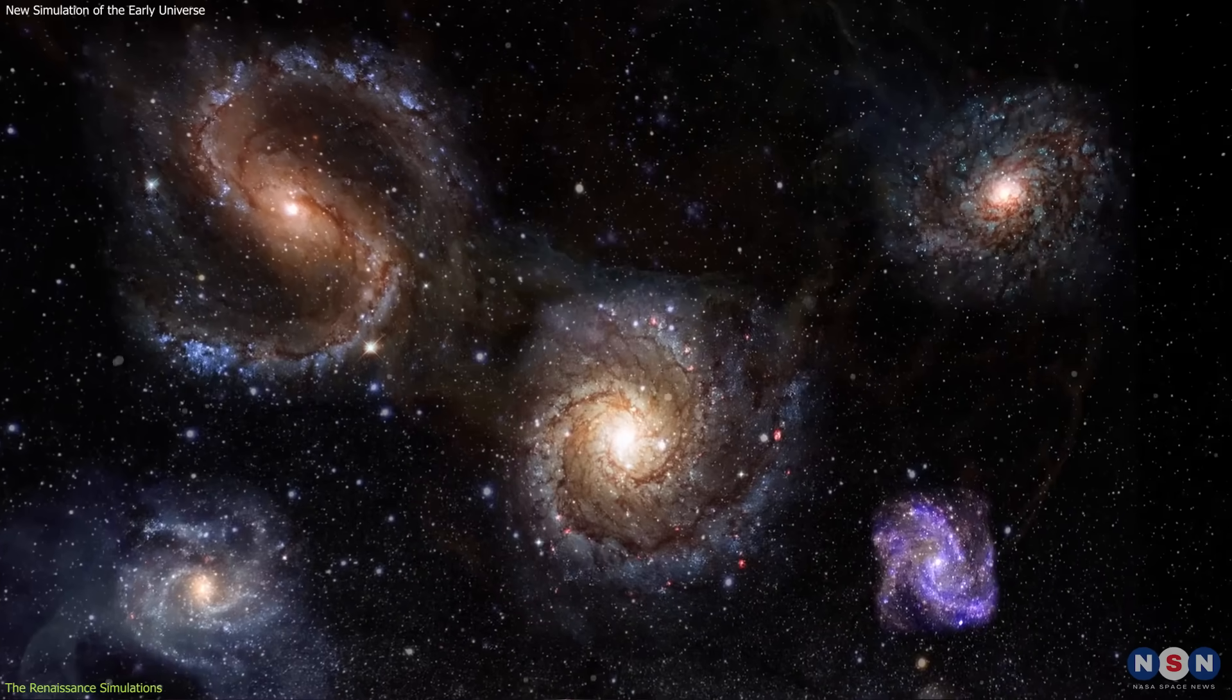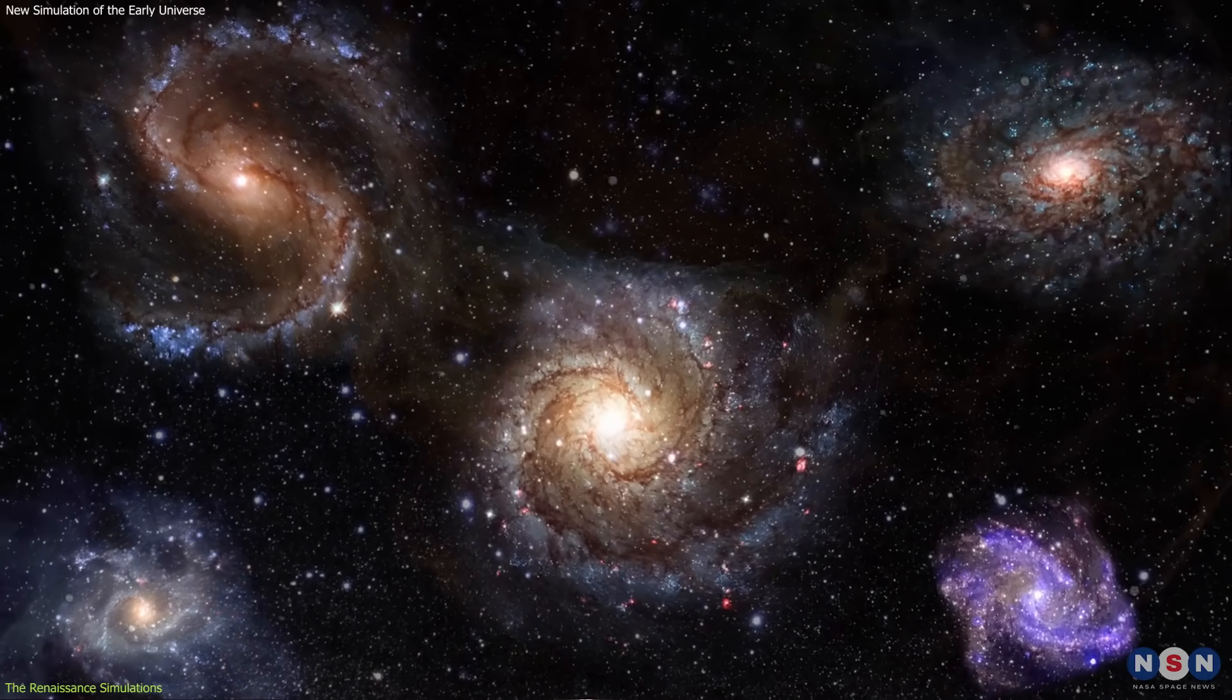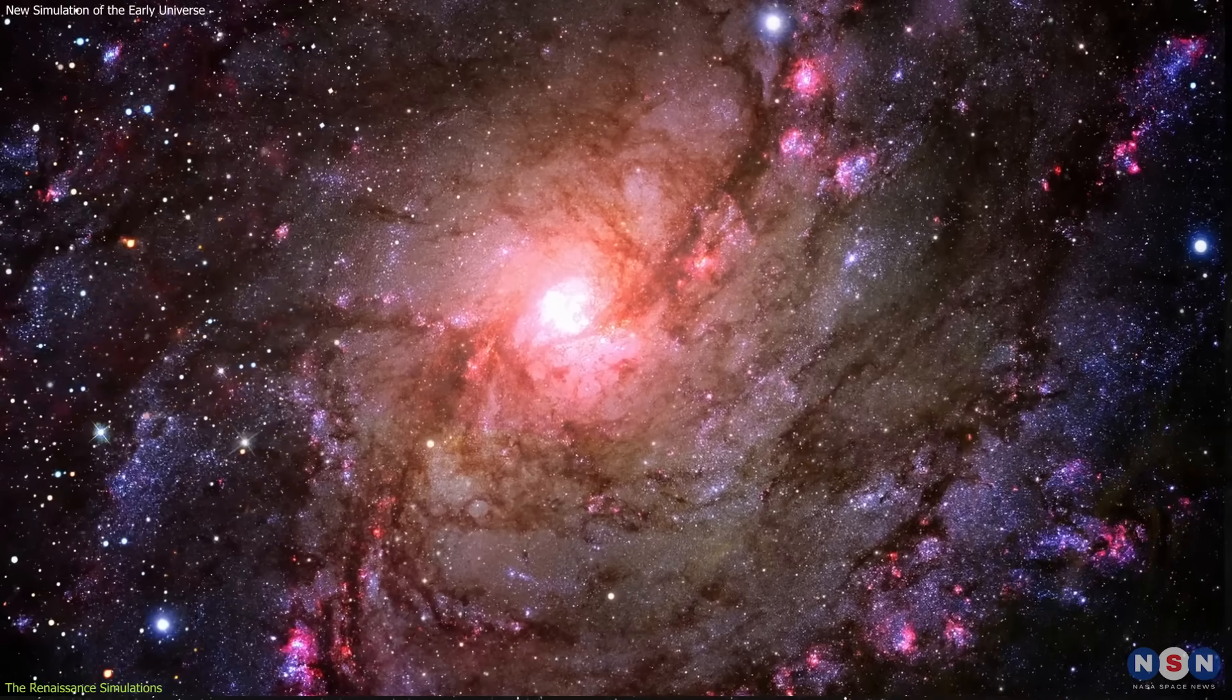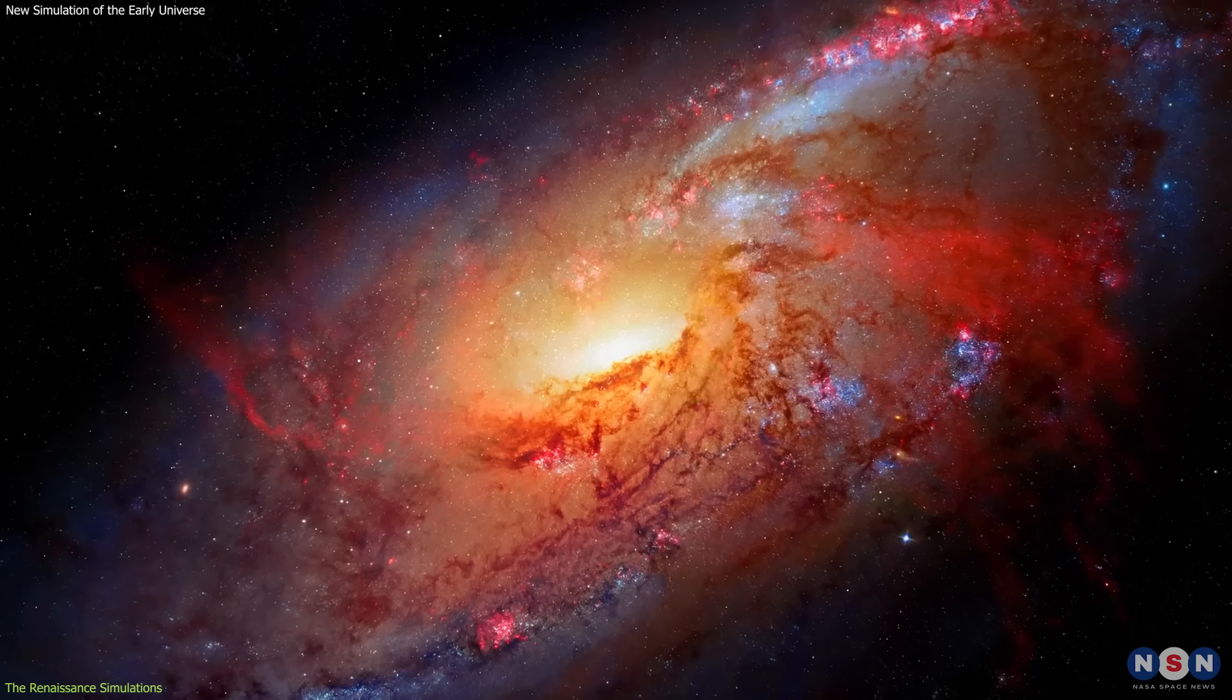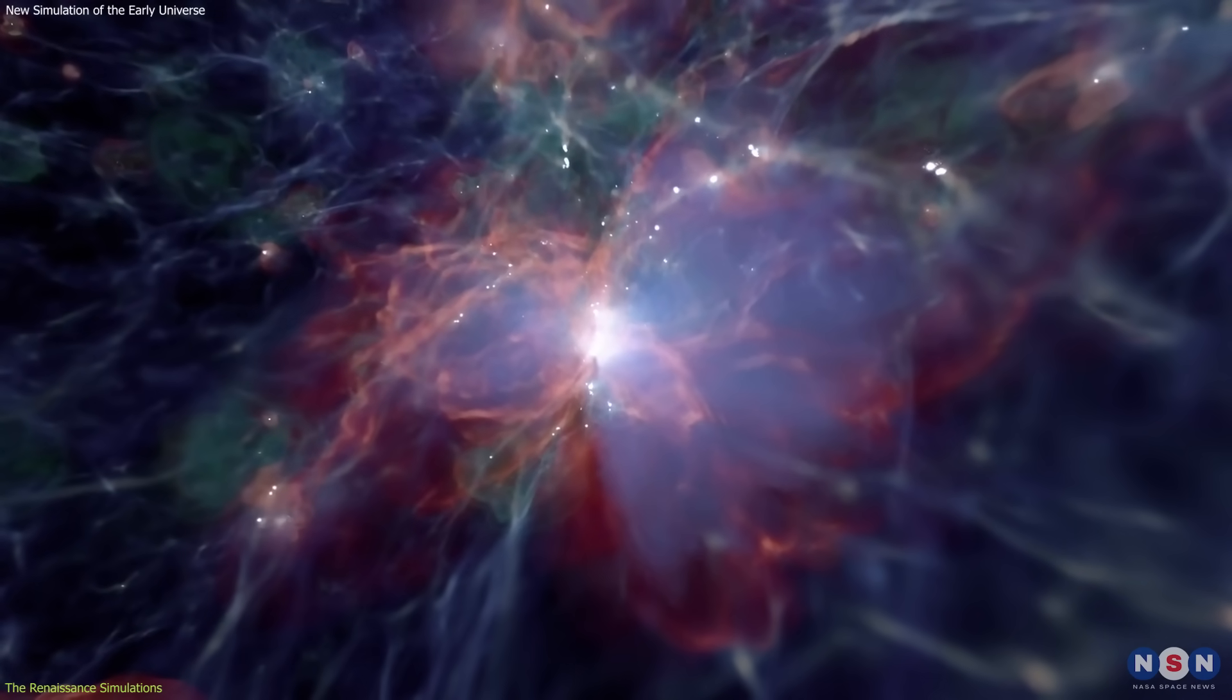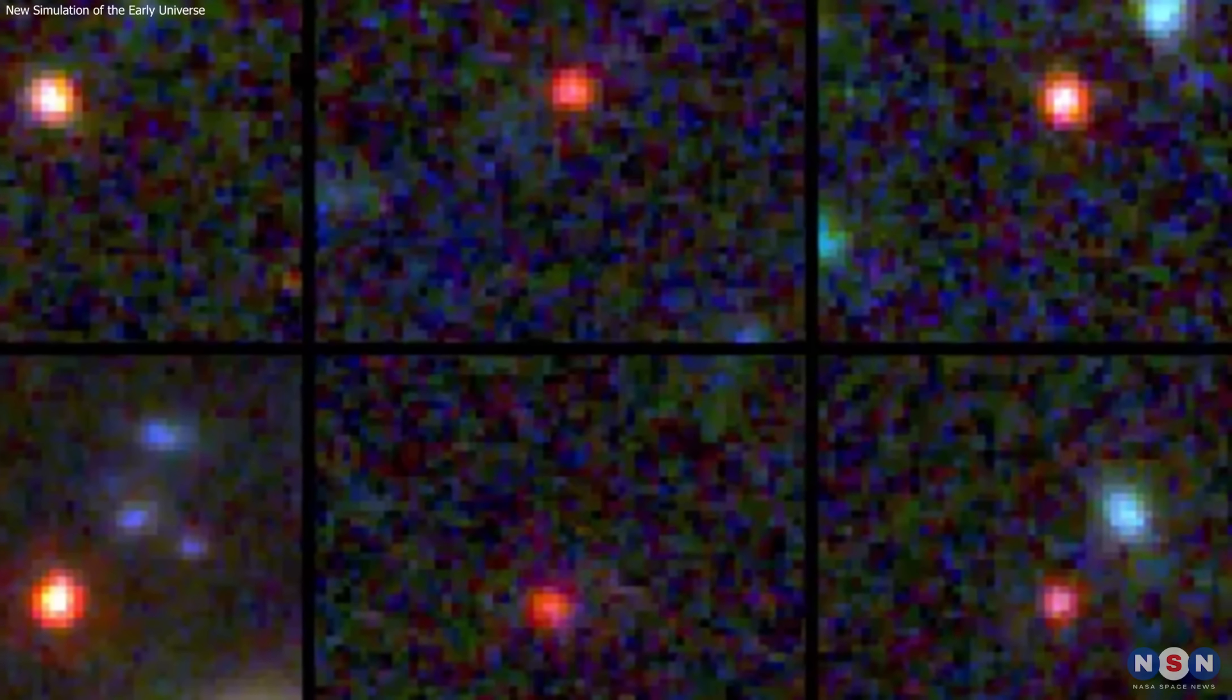The simulated galaxies have similar shapes, sizes, colors, and brightnesses as the observed galaxies. They also have similar properties such as mass, star formation rate, metallicity, etc. This means that the simulation is realistic and reliable, and that it can help us understand how these first galaxies formed and evolved.